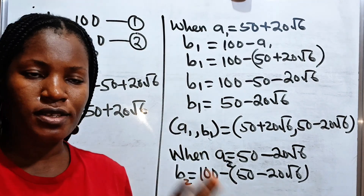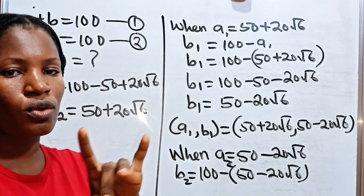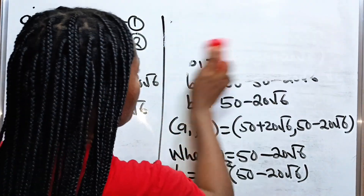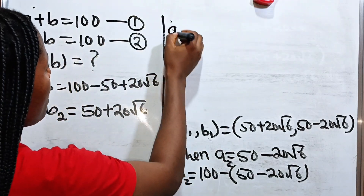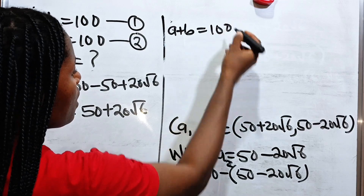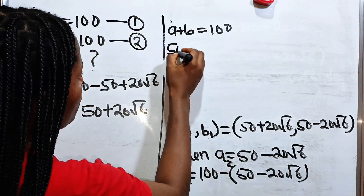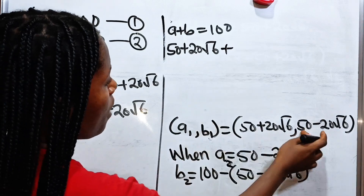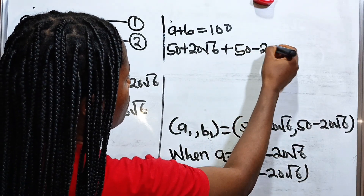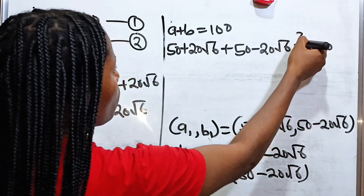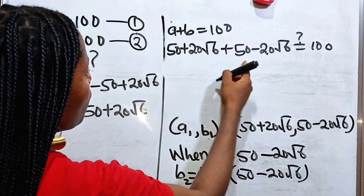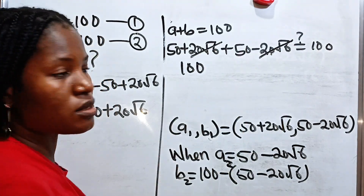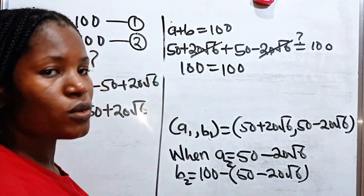Now, let's prove that the answers we got are correct. We are going to use just A1 and B1. The first equation says that A plus B is equal to 100. Our A is 50 plus 20 root 6, plus our B which is 50 minus 20 root 6. So 50 plus 50 gives us 100, and plus 20 root 6 minus 20 root 6 is 0. So you can see that 100 is equal to 100.